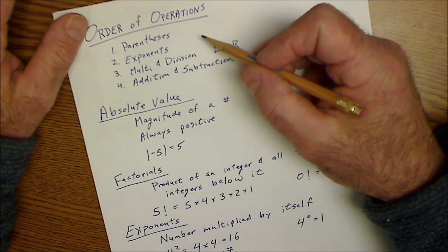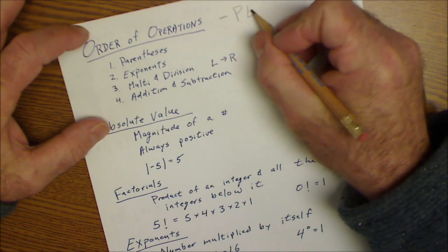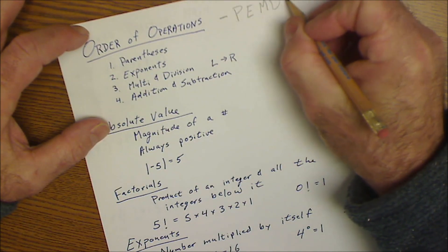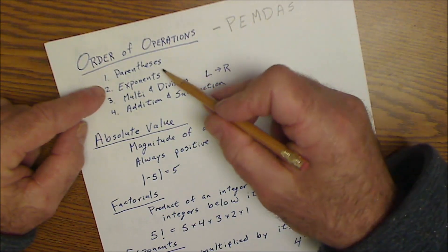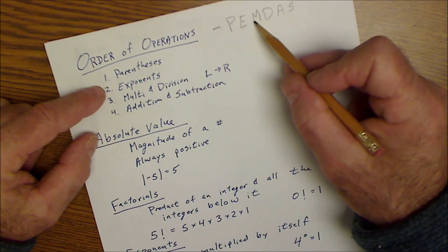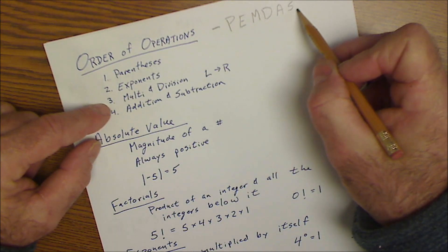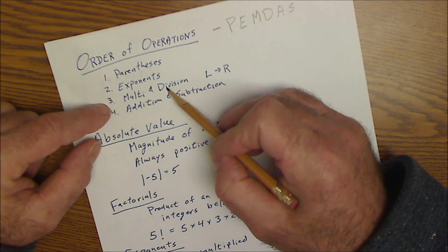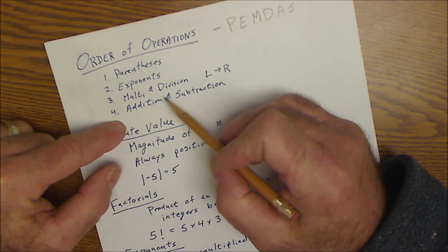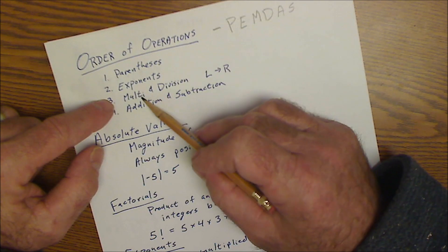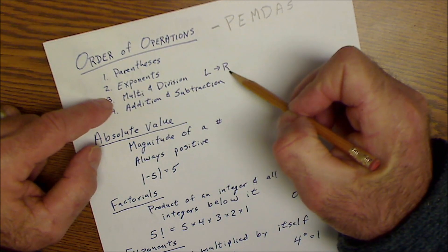The first is order of operations, and the mnemonic device for this is PEMDAS. That helps you remember which operations to do first. PEMDAS stands for parentheses first, then exponents, then multiplication, division, addition, and subtraction. Multiplication and division are grouped together, and all multiplication and division happens before addition and subtraction. But multiplication doesn't go before division — you just work left to right on all of those factors.